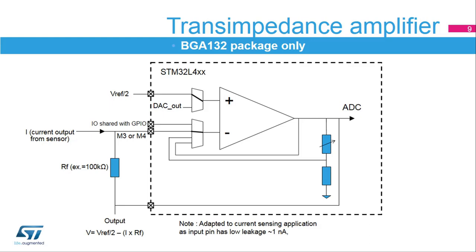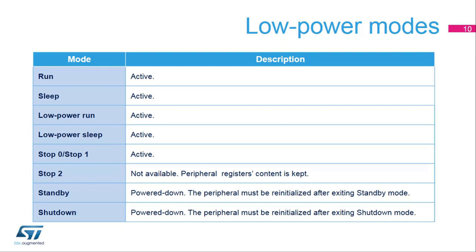The dedicated pads are only available on the BGA132 and BGA169 packages and have 1 nano-amp leakage, which allows for a current-to-voltage conversion with high precision. The operational amplifiers are active in the following low-power modes: run, sleep, low-power run, low-power sleep, stop 0, and stop 1 modes.